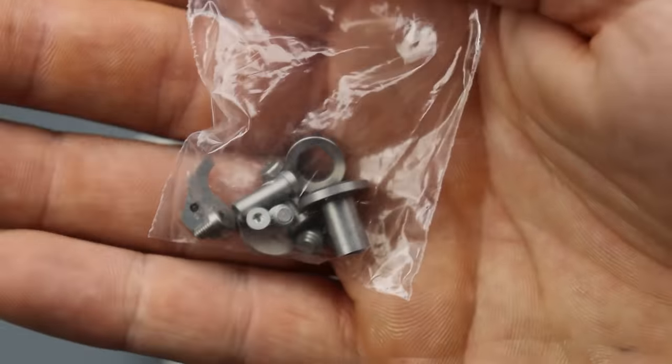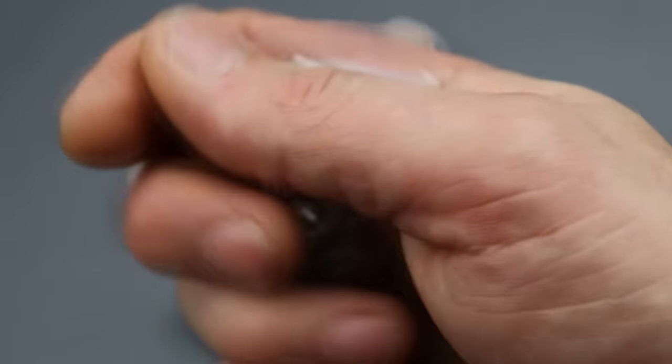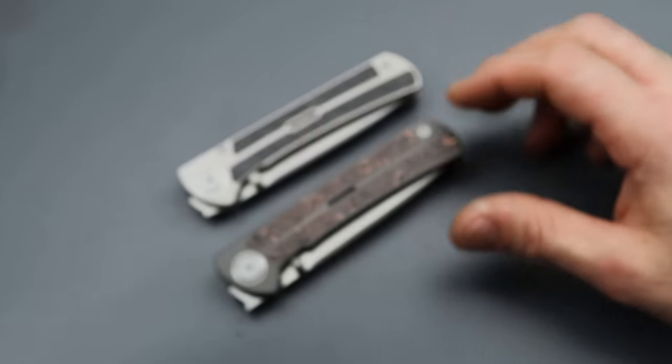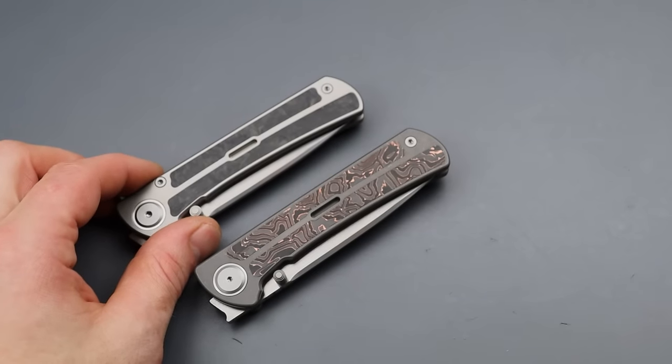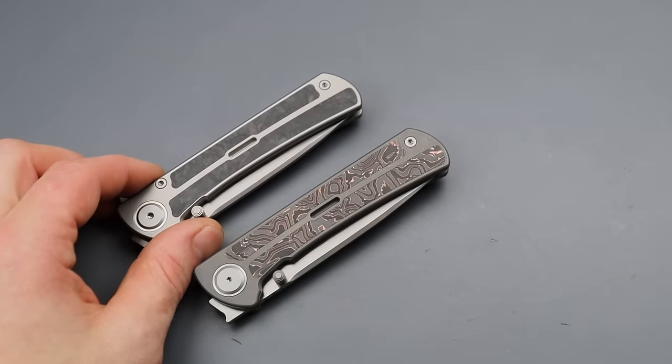Now the next one does come with extra hardware also with a steel lock bar insert that has a ceramic ball already attached, which is really cool. I love to see that. Now this knife already existed but the original one was horrible and this is the Peregrine.